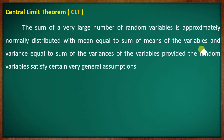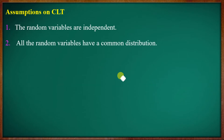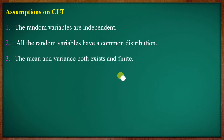If you have a normal distribution, this is the Central Limit. The general assumptions are: first, the random variables are independent. Second, all the random variables have a common distribution. Third, the mean and variance both exist and are finite.